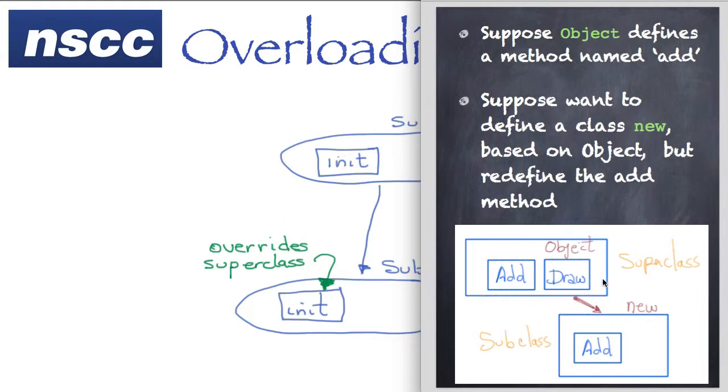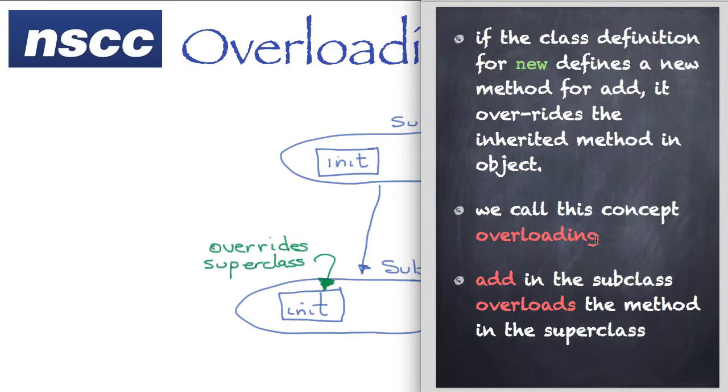When we create a subclass based on object, we can define a subclass that inherits from object. We might want to inherit the draw method but have the add method behave slightly differently. We can redefine or create a new definition for the add method. When using the subclass, Python uses the local method for add if it exists, not inheriting from the superclass. We call that overloading. In our example, the add method in the subclass overloads the method in the superclass.